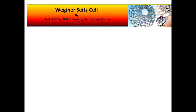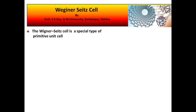Good morning students. Today I am going to teach you about a very special type of primitive cell called the Wigner-Seitz cell, very often also called the Wigner-Seitz unit cell. A Wigner-Seitz cell is a special type of primitive unit cell, and it is named after Wigner and Seitz.